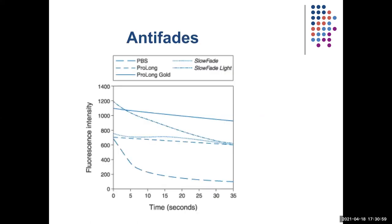Here's an example of anti-fade performance over time in seconds. The dashed line at the bottom shows the fluorophore without anti-fade: at zero seconds it's fluorescing, but by five seconds it's already much dimmer, and after that it goes down to almost nothing. When you add anti-fade, you get a bleaching curve that is much better — it doesn't bleach nearly as fast.